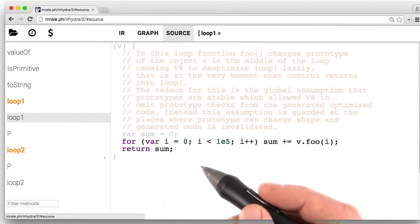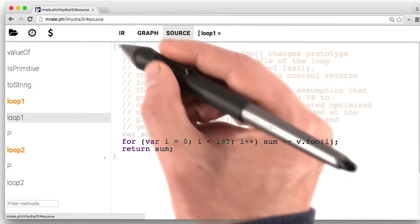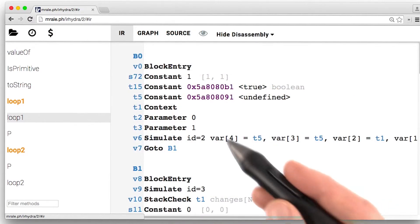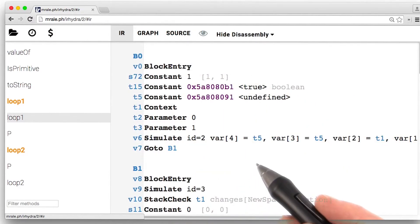But if we use this tool called IR Hydra to look at how Chrome's JavaScript engine V8 would look at representing it, it looks like this. Now, you don't need to understand any of this. This is just how Chrome and its V8 JavaScript engine understands the code that you wrote.